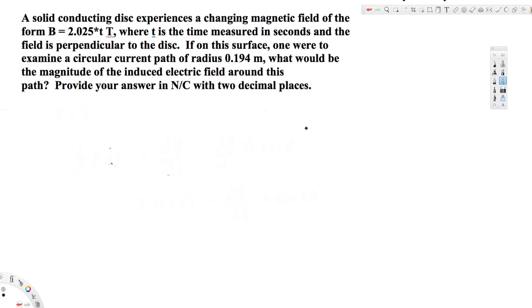If on this surface one were to examine a circular current path of radius 0.194 meters, what would be the magnitude of the induced electric field around this path?